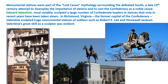Edward Valentine most notably sculpted a large number of Confederate leaders in statues that only in recent years have been taken down. In Richmond, Virginia, the former capital of the Confederacy, Valentine sculpted huge monumental statues of soldiers such as Robert E. Lee and Stonewall Jackson. Valentine's great skill as a sculptor was evident.